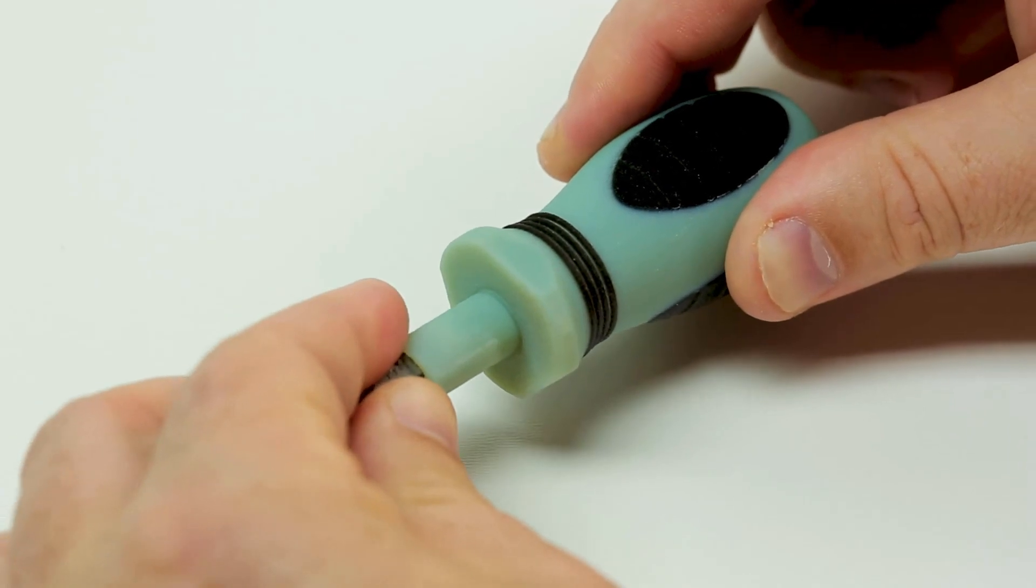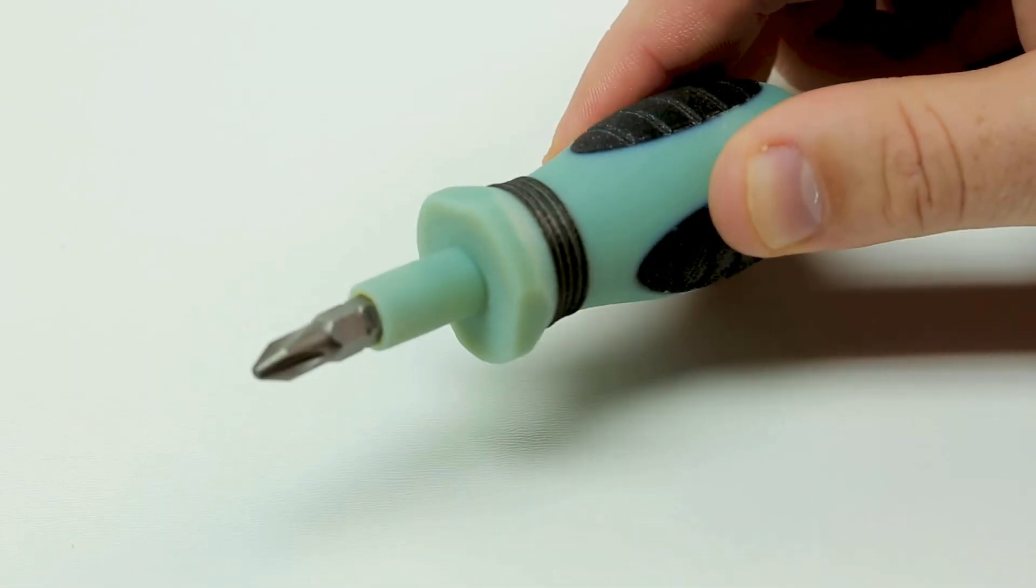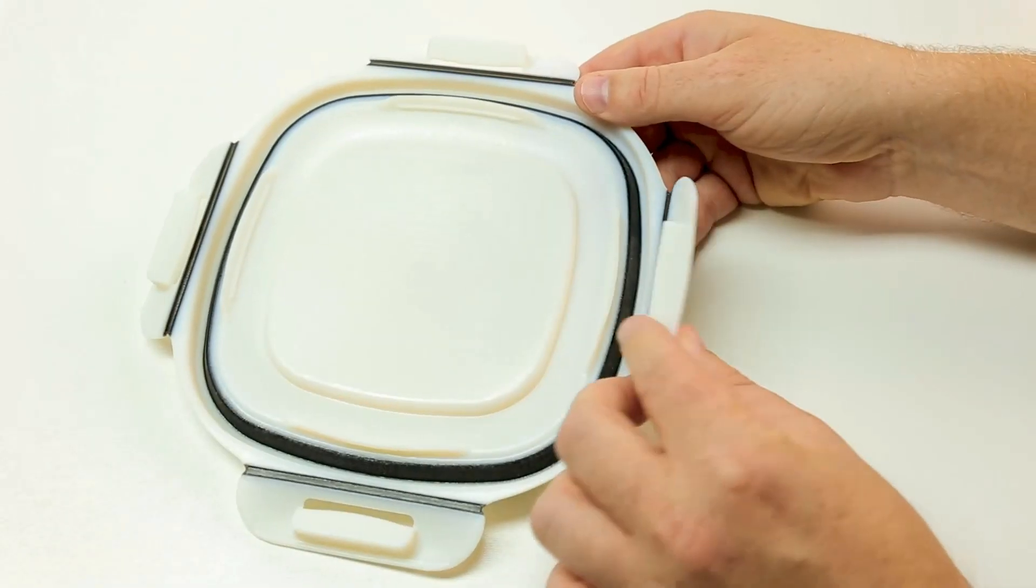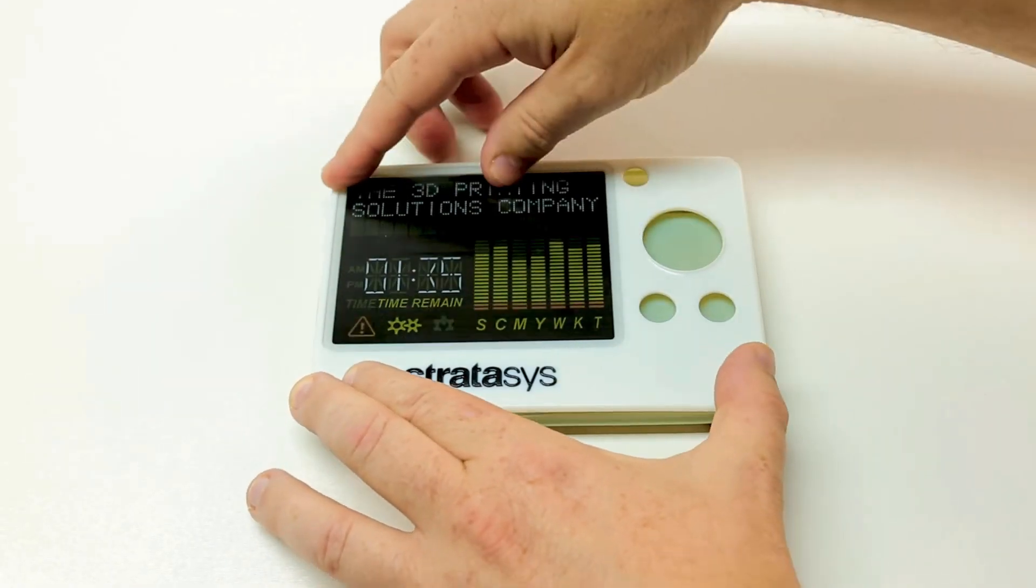This rigid-rubber combination is ideal for functional prototypes featuring soft touch parts, overmolding, living hinges, instructions, and text.